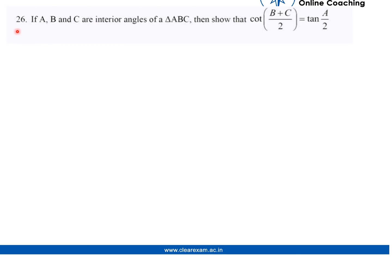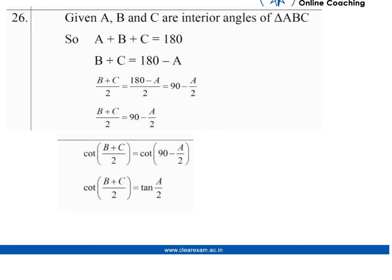So, the given question says that if A, B, and C are interior angles of a triangle ABC, then show that cot of B plus C by 2 is equal to tan of A by 2. So, here we go.